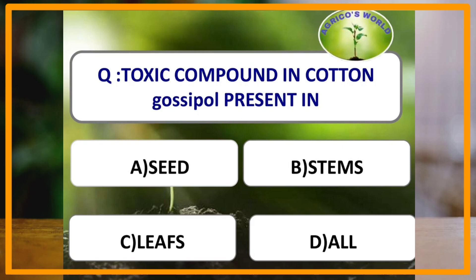The toxic compound gossypol in cotton is present in which of the following parts of cotton? Gossypol is present in the seeds of cotton. Thank you — please like, share, and subscribe to our channel Agricose World.